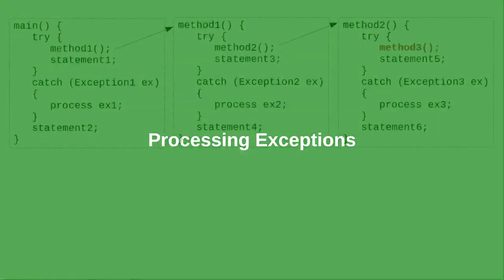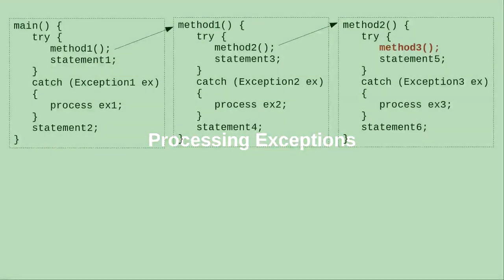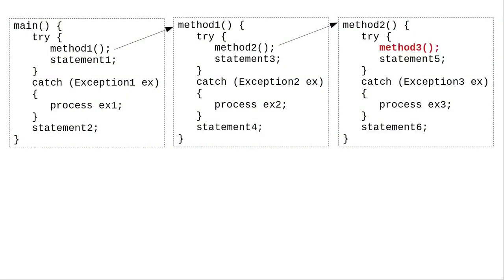Let's see how Java processes exceptions. Presume we have a program where the main method calls method 1, which calls method 2, which calls method 3. Main, method 1, and method 2 each catch a different sort of exception.